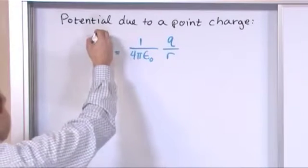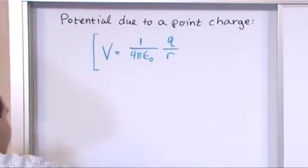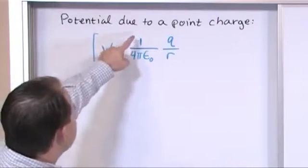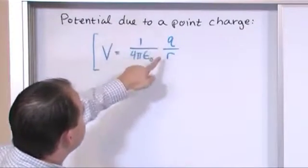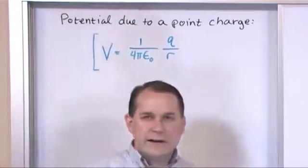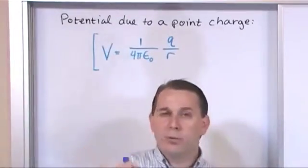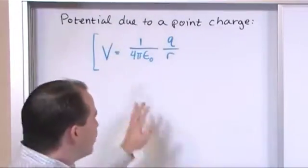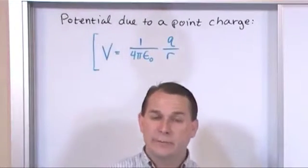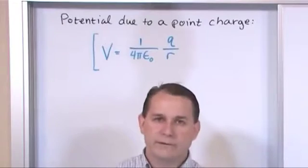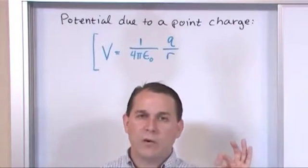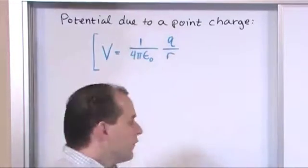So this is the potential. If you put into this, 4π, those are constants, you know what this constant is, this is a number in Coulombs, this is a number in meters away from your point charge. Then when you put all of this in and hit the enter button you're going to get a number back and that number is in volts.